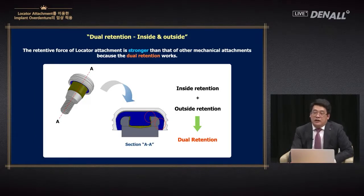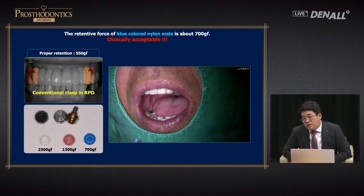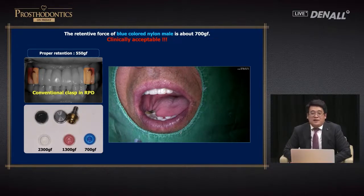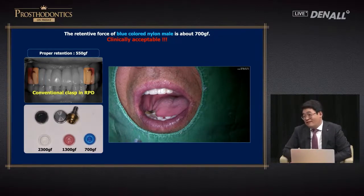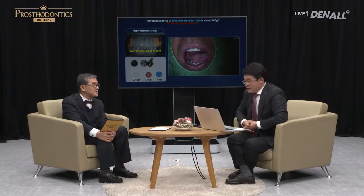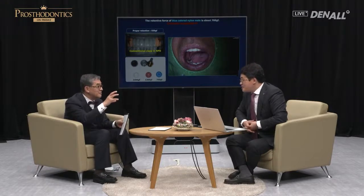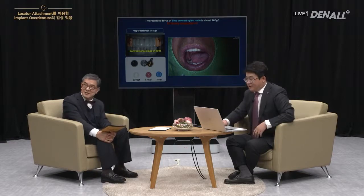Because the locator has a dual retention method, its retentive force is very strong. In clasp RPD, the appropriate retentive force is 550 g force to avoid too much burden on natural teeth. The blue locator is 700 g force — implant can withstand that — but personally I believe pink or white is too strong. I'd rather have two blues and one pink per set. Clinically, the white is piling up and I'm lacking in blue. You cannot order just blue; you have to order in sets.